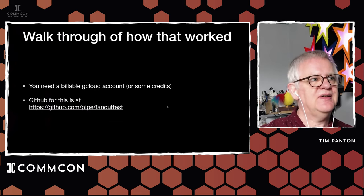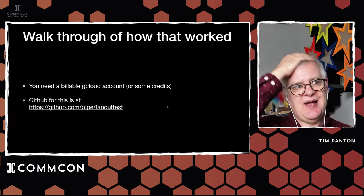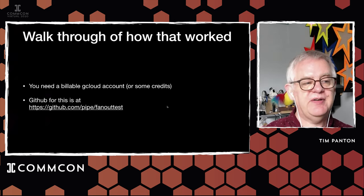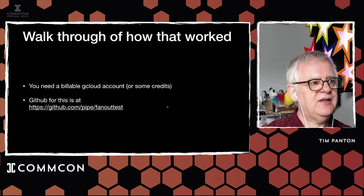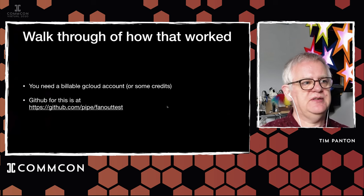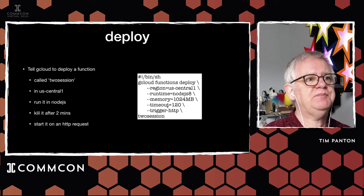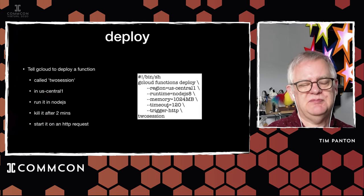I'm going to walk you through how that worked. To do this, if you want to do this for yourselves, you need a billable Google Cloud account, or some credits on that account — and not very much actually, because it's shockingly cheap to do this. The GitHub for this is github.com/pipe/fan-out-test. In that directory you'll find four files, three of which are interesting.